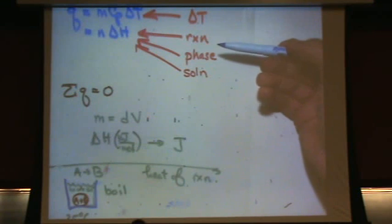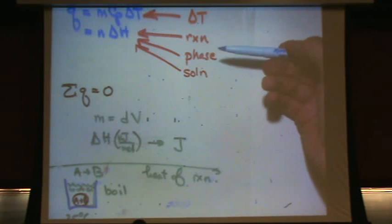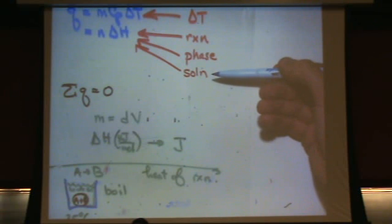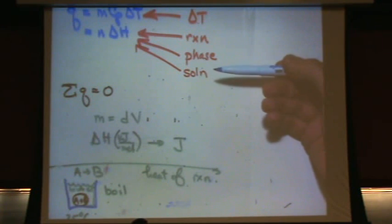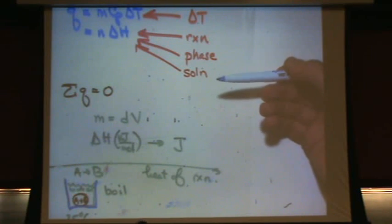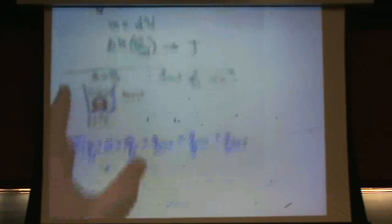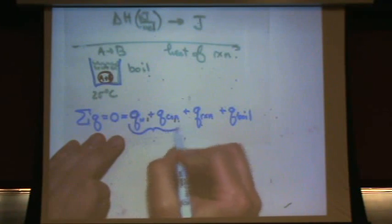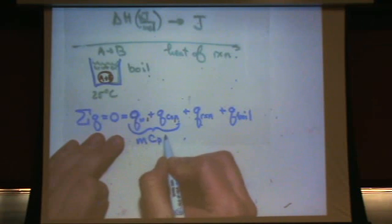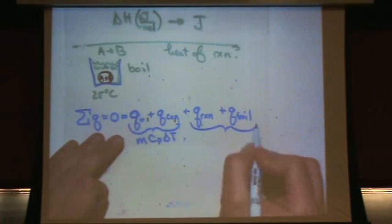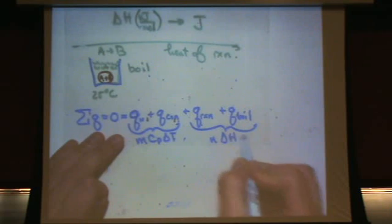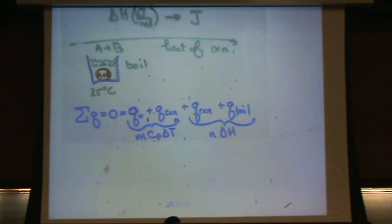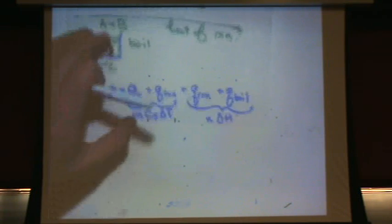Any other phase changes? No. Is there a solution? This is a solution, but it's not a delta H of solution. That usually happens when you mix stuff. So there's all the Q's - four Q terms. These two here are MCP delta T type terms. These two here are N delta H terms. You've got to know the difference.